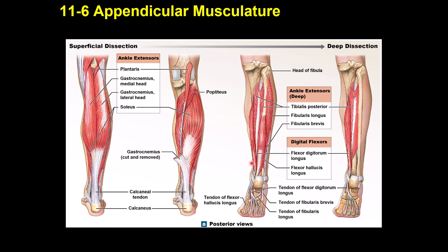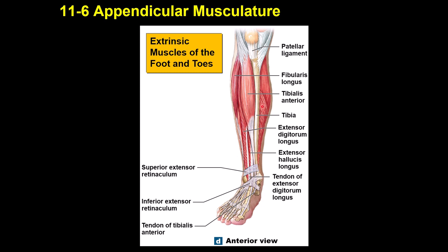Flexor digitorum longus and flexor hallucis longus cause flexion of the toes. On the anterior leg, tibialis anterior causes dorsiflexion. Extensor digitorum longus causes extension of the toes, and extensor hallucis longus goes to the big toe and causes its extension. Extensor retinacula are located on the anterior ankle securing those tendons.